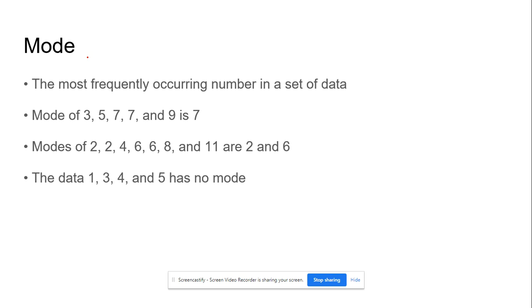The mode. As you can see, the mode equals most. So it's the most frequently occurring number in a set of data. The mode of 3, 5, 7, 7, and 9. There's two 7s. So therefore, the most often number is 7.